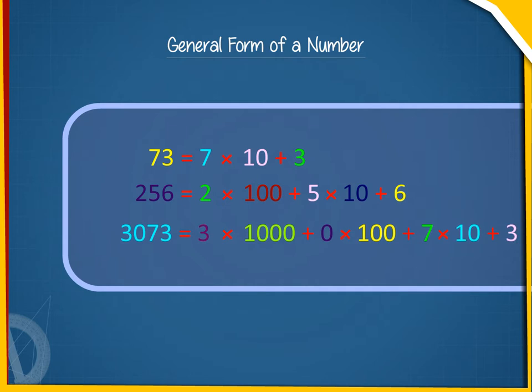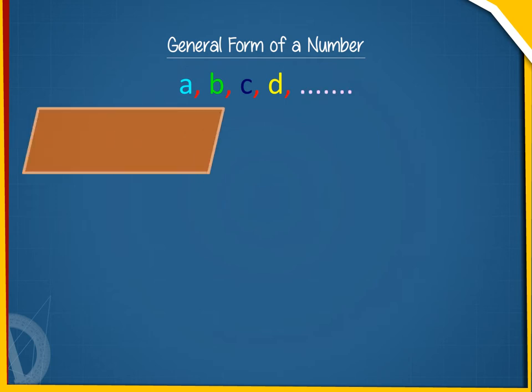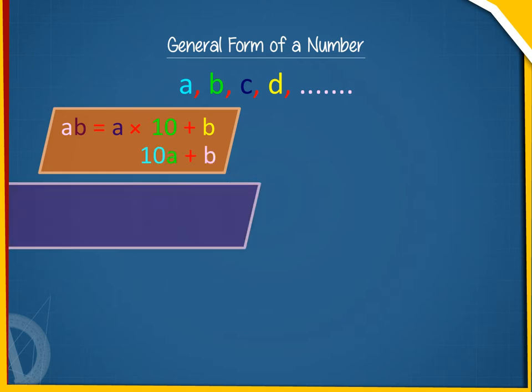If we represent the digits of a number by letters say ABCD, then AB equals A into 10 plus B, or 10A plus B.